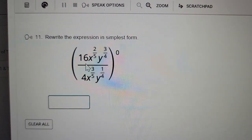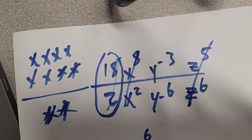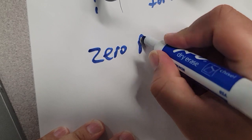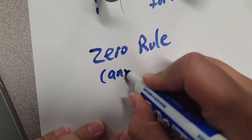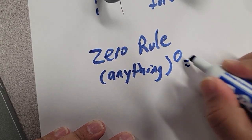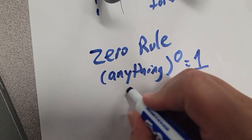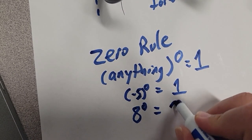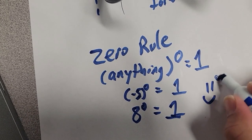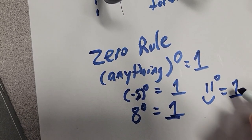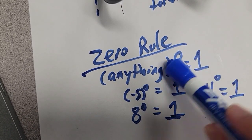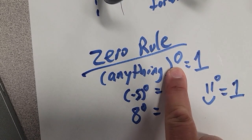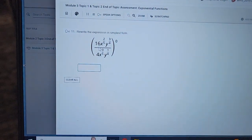This next one looks complicated, but it's actually the best exponent rule — the zero rule. The zero rule says: anything with a zero exponent always equals positive 1. It doesn't matter what's inside: negative 5 to the zero = 1; positive 8 to the zero = 1; even a smiley face to the zero = 1. Anything with a zero exponent equals 1. So if you see a little zero exponent, the answer is positive 1.